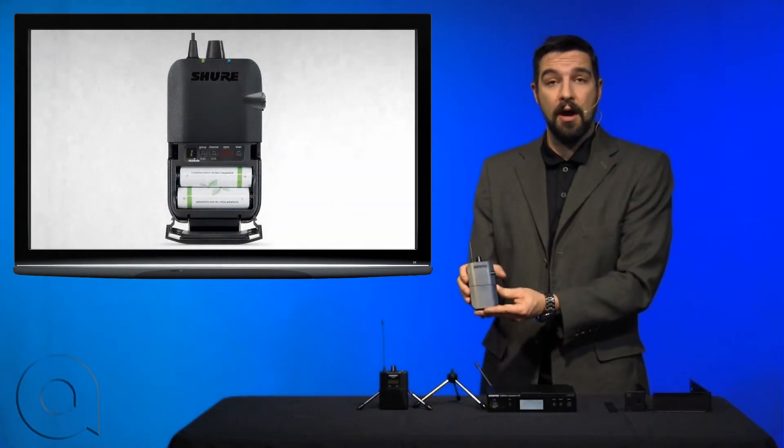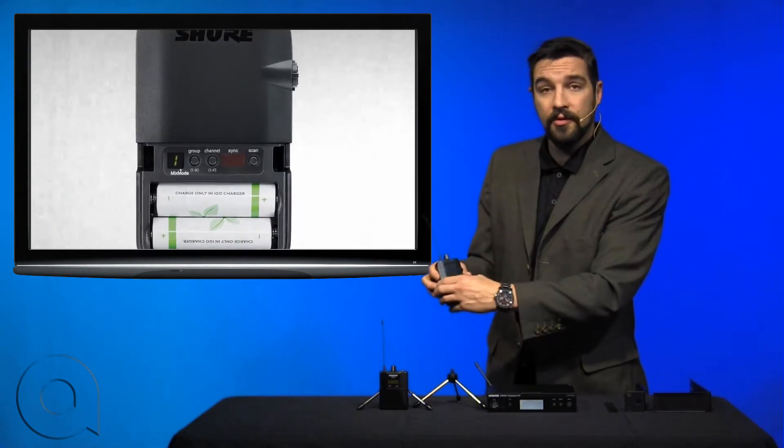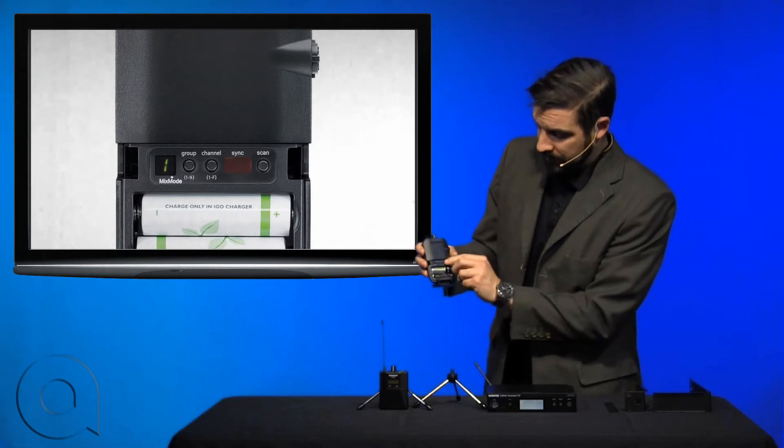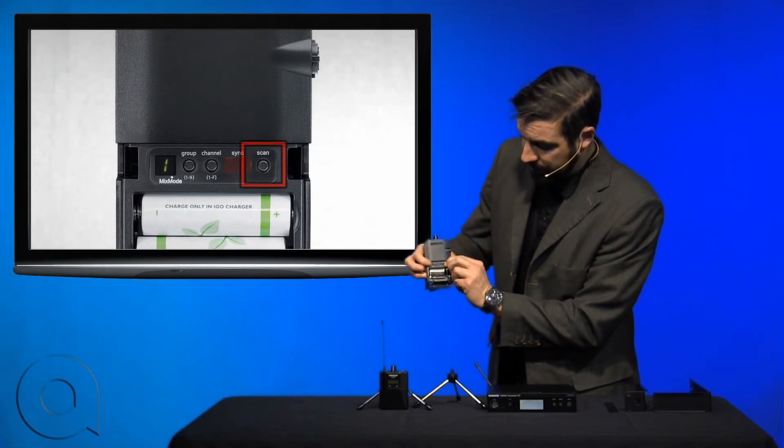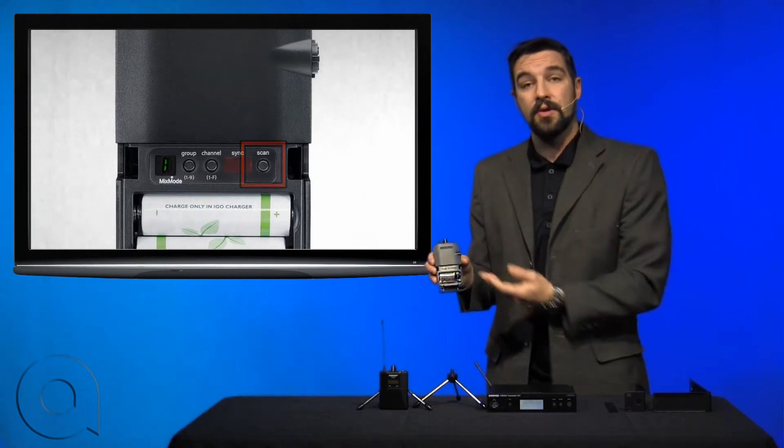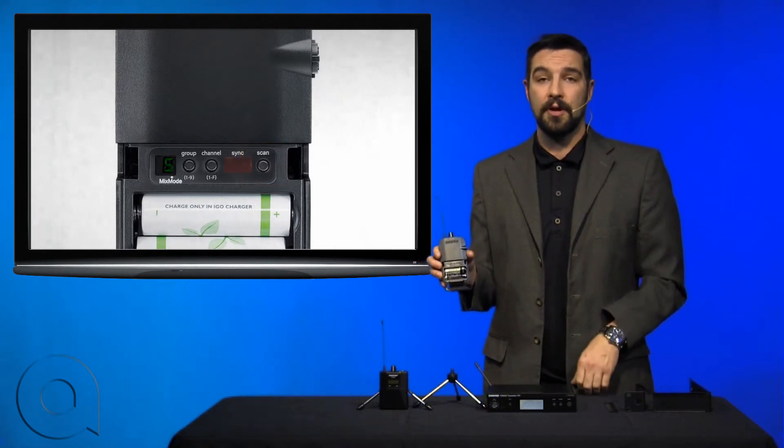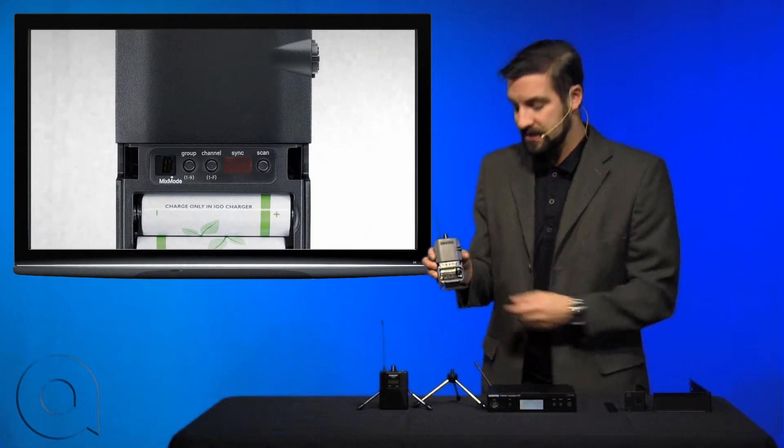We'll begin with the P3R which is the standard belt pack with plastic construction. Simply open the unit up and hold down the scan button until the display starts changing. Once it does, it's going to go through the entire bandwidth to find the best available frequency. This can take up to 10 or 15 seconds.